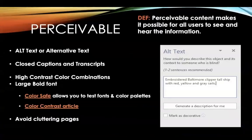Number one: perceivable content makes it possible for all users to see and hear the information. In addition to providing for the needs of neurotypical learners, it is also necessary to take into account the thousands of individuals using screen readers, either because of a visual or cognitive impairment. For these learners, listening is an easier, sometimes the only option for understanding digital materials.